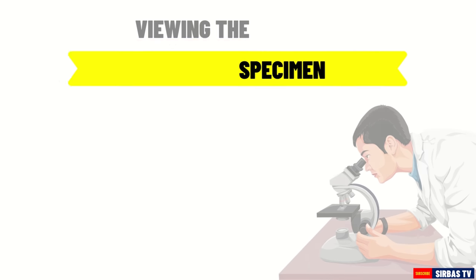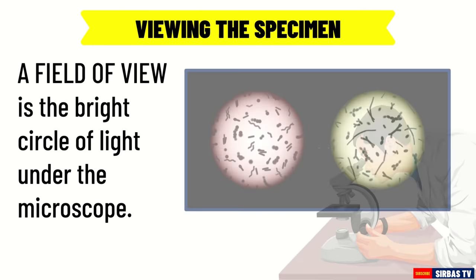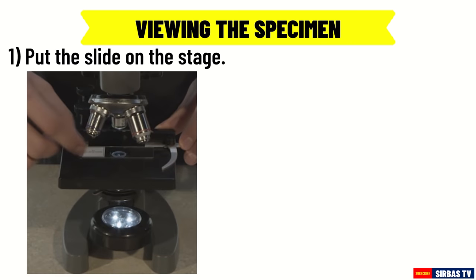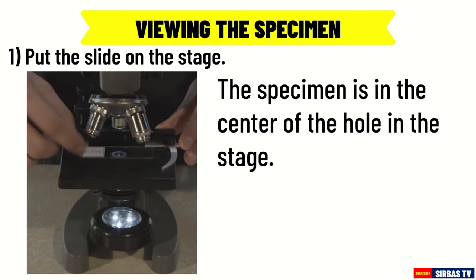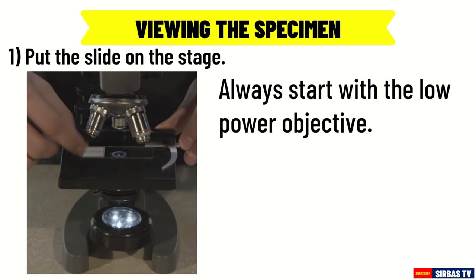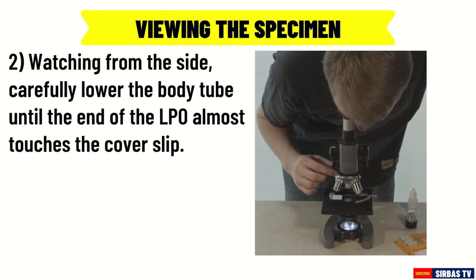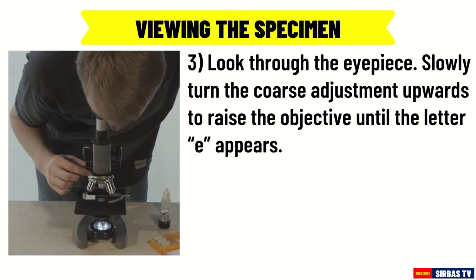The next process is viewing the specimen. The field of view is the bright circle of light under the microscope. Remember not to use direct sunlight as a light source, because it can permanently damage the retina of the eyes. Step 1: Put the slide on the stage, making sure the specimen is in the center of the hole and under the low power objective. Hold it firmly with the stage clips. Step 2: Watching from the side, carefully lower the body tube until the end of the low power objective almost touches the coverslip. Step 3: Look through the eyepiece and slowly turn the coarse adjustment upward to raise the objective until the letter E appears clearly, indicating that you have focused on it.